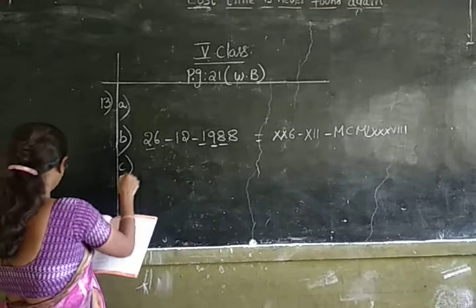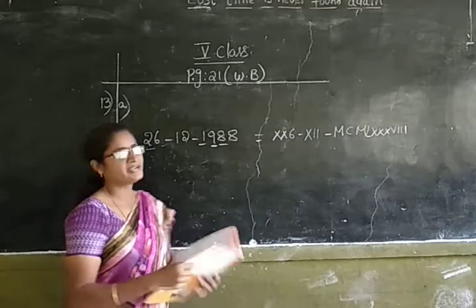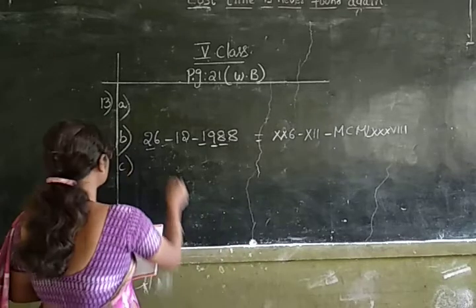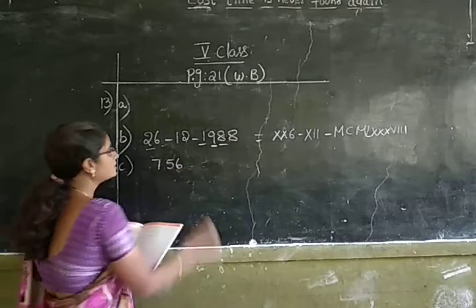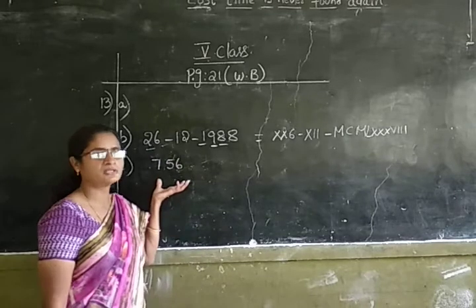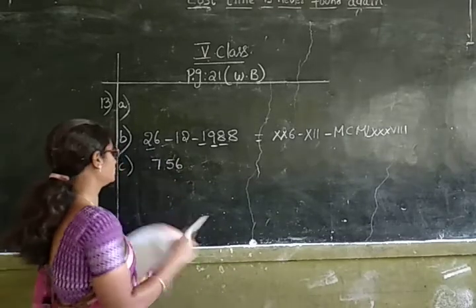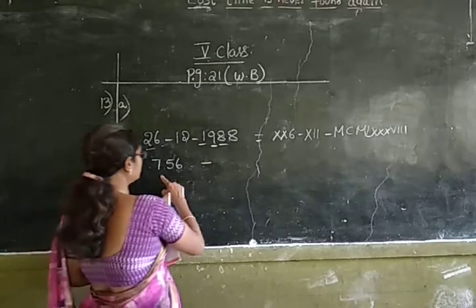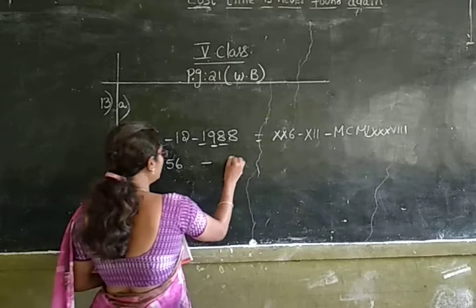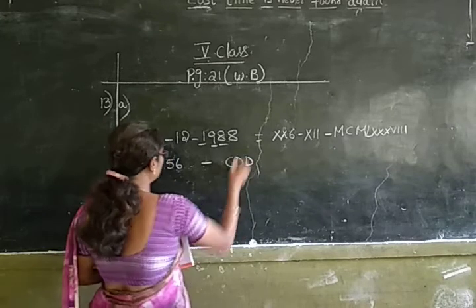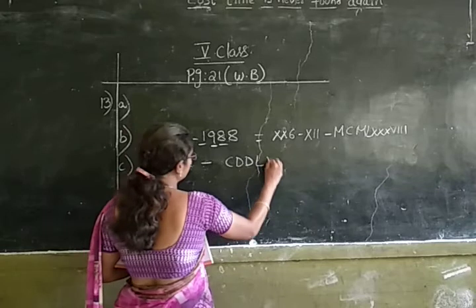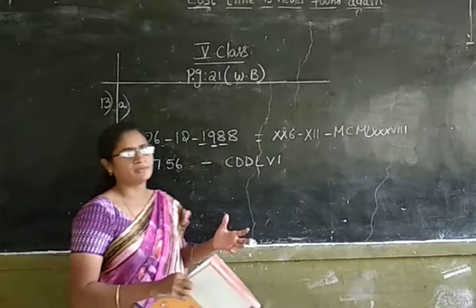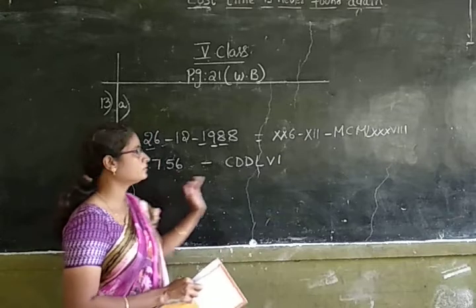Next, in the C question he has to write his address. He has written his house number, which is 756. His house number is in Indo-Arabic numeral and we have to convert it into Roman numeral. 756 is 700 plus 50 plus 6. 700 means DCC. 50 means L and 6 means VI. So we have converted the house number into Roman numeral.